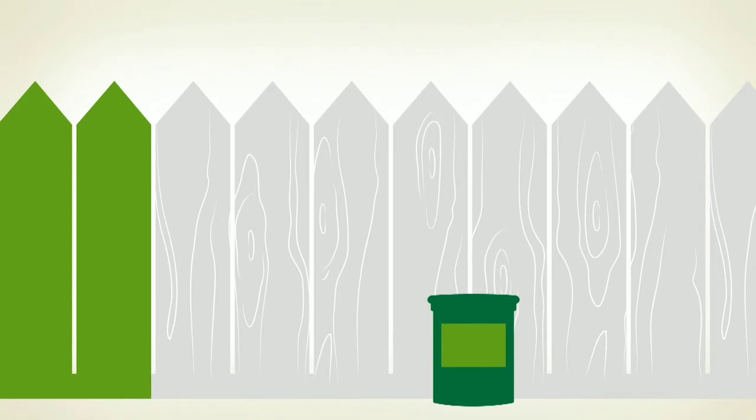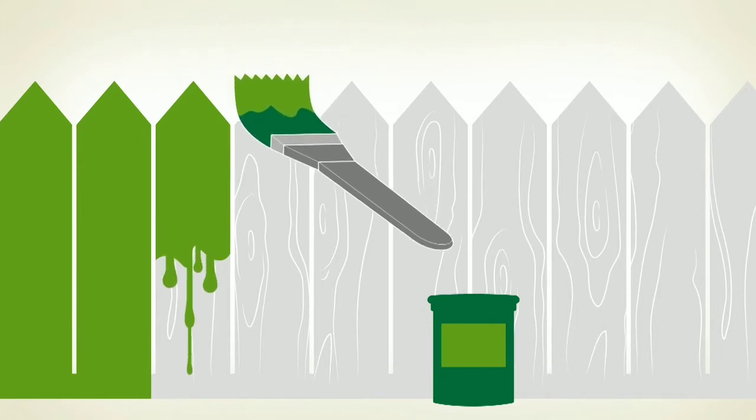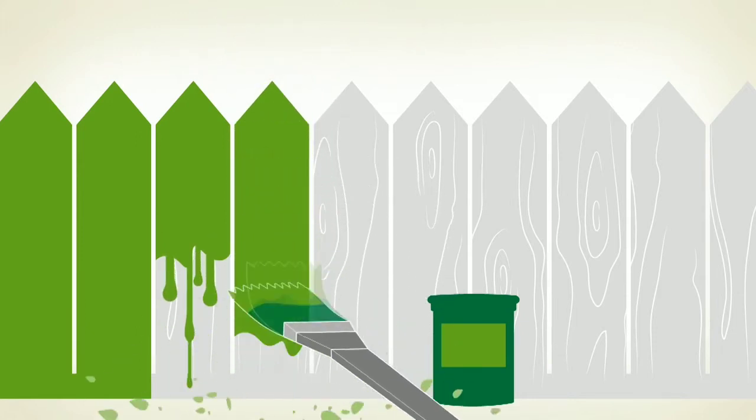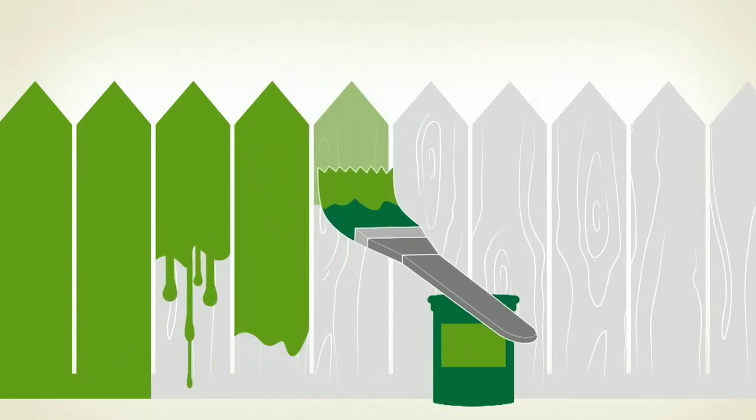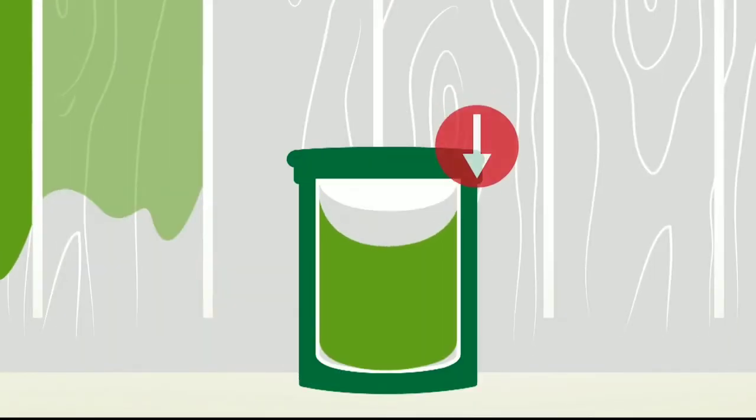Rheology modifiers control the flow properties of paints. Without them, paints would be as runny as water. They would spatter in all directions during application, have little hiding power, and exhibit a much shorter shelf life due to pigment sedimentation.